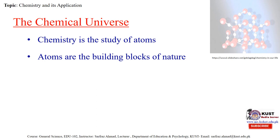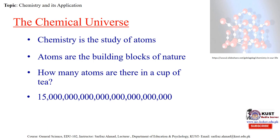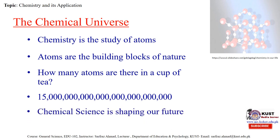Soap is a chemical that mankind has been making for a very long time. You can form a crude soap by mixing ashes and animal fat. How can something so nasty actually make you cleaner? The answer has to do with the way soap interacts with oil-based grease and dirt. How many atoms are there in a cup of tea? In a cup of tea, there are almost 150,000,000,000,000,000,000,000 atoms. So the chemical sciences are shaping our future.